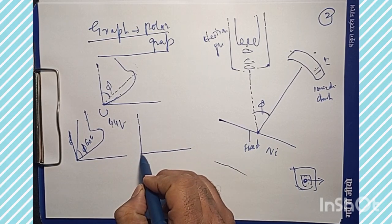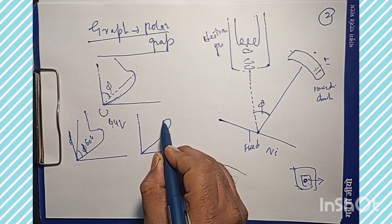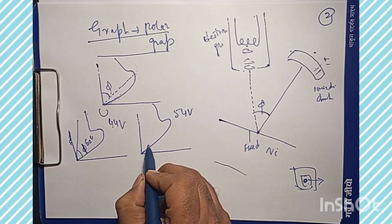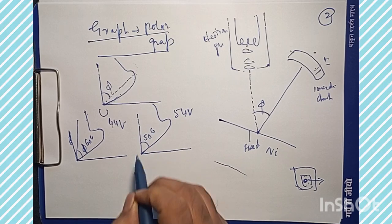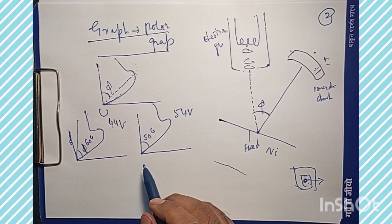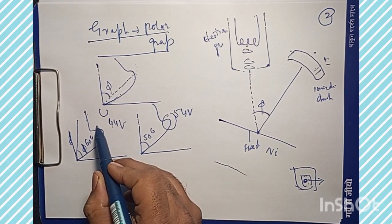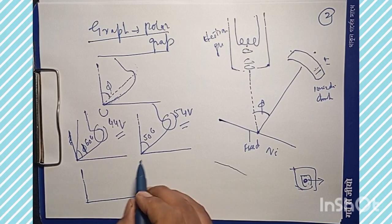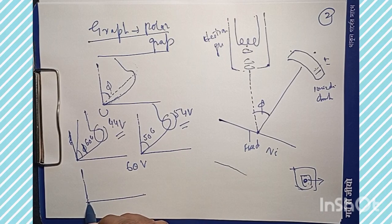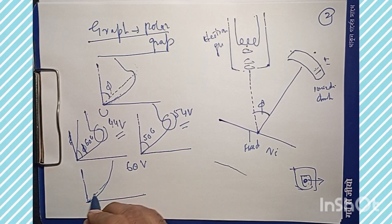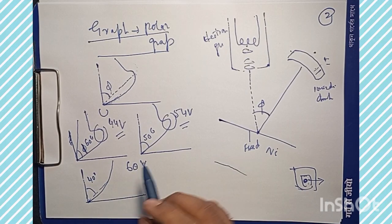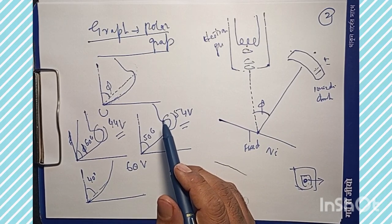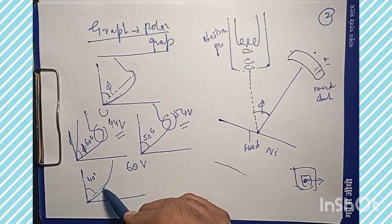At 54 volts the hump is most prominent. With further increase in accelerating potential and electron energy, when we take the system to 68 volts at an angle of approximately 40 degrees, this hump disappears. With further increase in electron energy or accelerating voltage, the graph becomes fairly smooth again.